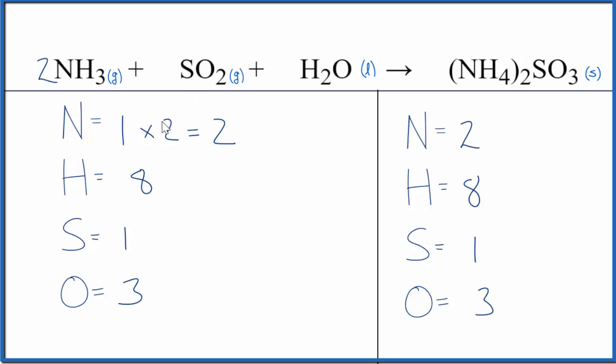And we should note that we have one, two, three things coming together to form one product. So this is a combination or a synthesis reaction. That is the type of reaction. This is Dr. B with the balanced equation and type of reaction for NH3 plus SO2 plus H2O. Thanks for watching.